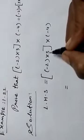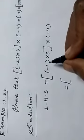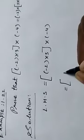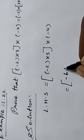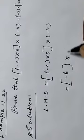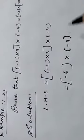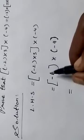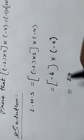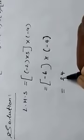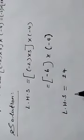First we find the bracket inside values. So minus 2 into 3: 2 threes are 6, and minus into plus gives minus 6. Then minus 6 into minus 4: 6 fours are 24, and minus into minus gives plus. So left-hand side equals 24.